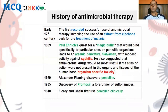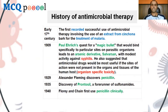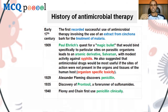Ehrlich had already suggested that antimicrobial drugs would be most useful if the site of action would not be present in humans, so that selective toxicity would be to the bacteria and not to the humans. In 1928–29, Alexander Fleming discovered penicillin — a fortuitous discovery, as he wasn't looking for it. In 1935, Prontosil was discovered as the forerunner of sulfonamides, and in 1940, Florey and Chain began using penicillin clinically.